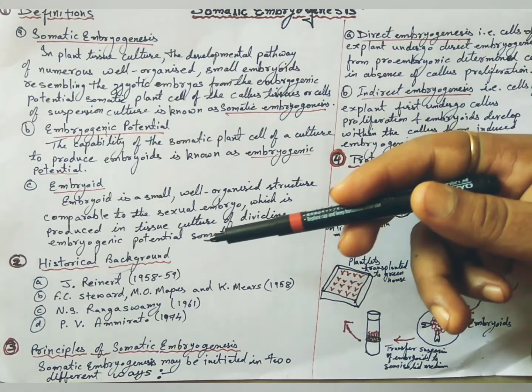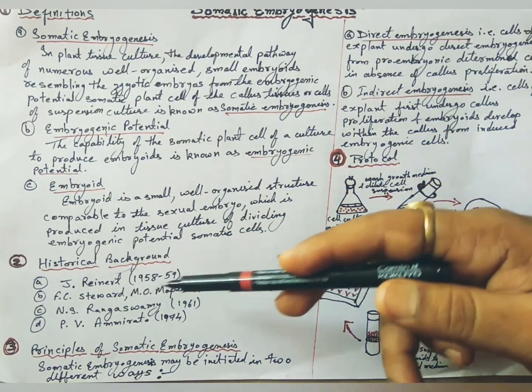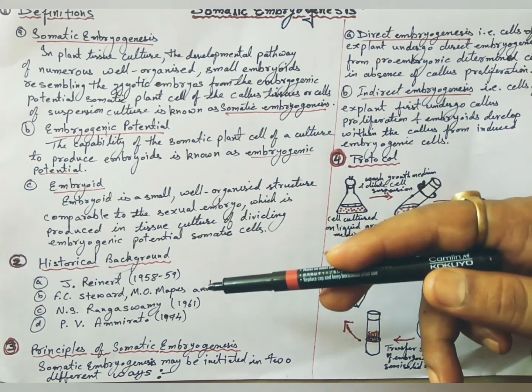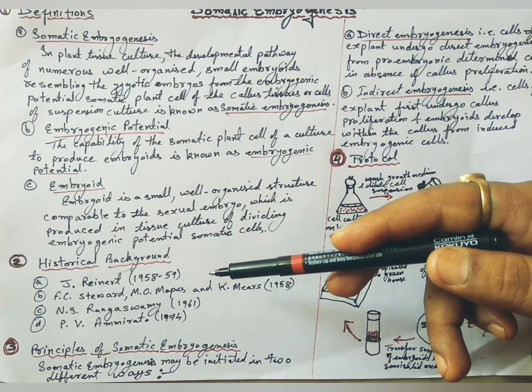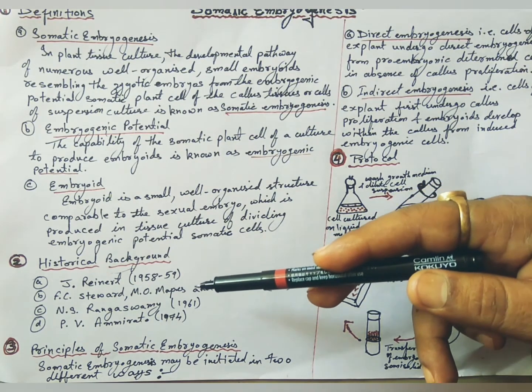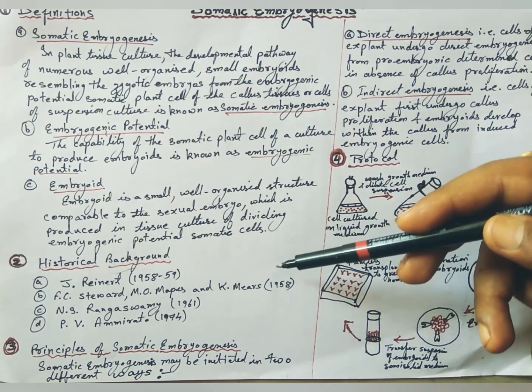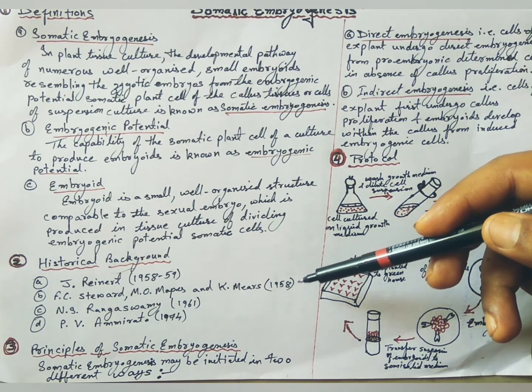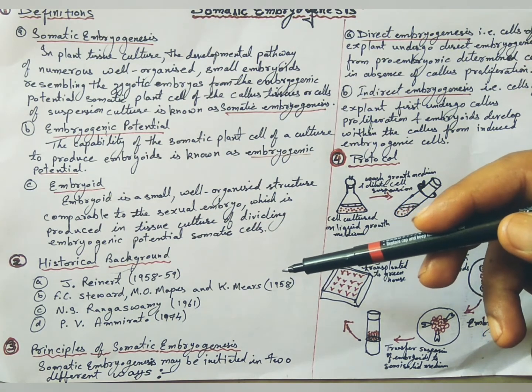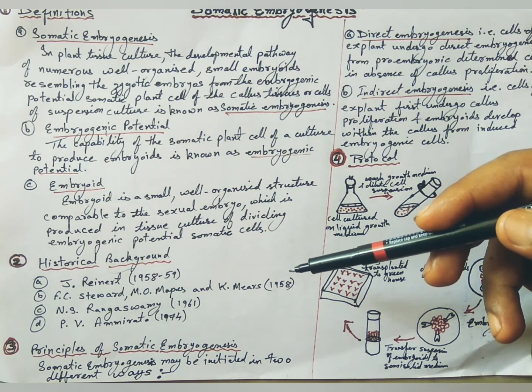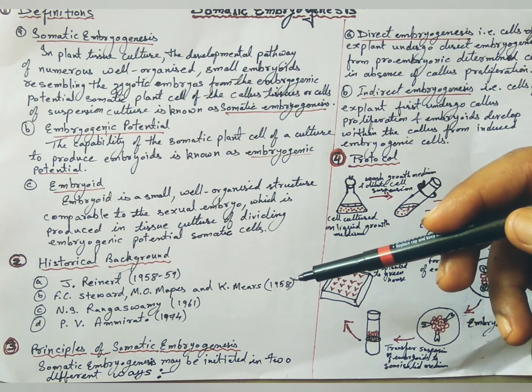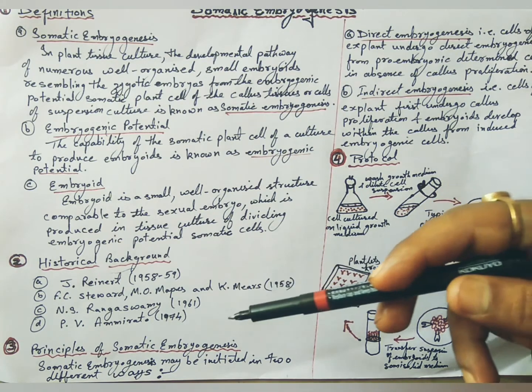Historical background: J. Reinard, 1958-59, reported his first observations of in vitro somatic embryogenesis in Daucus carota. F.C. Steward, M.O. Mapes, and K. Mears, 1958, also reported somatic embryogenesis in carrot from freely suspended cells and emphasized the importance of coconut milk for in vitro somatic embryogenesis.